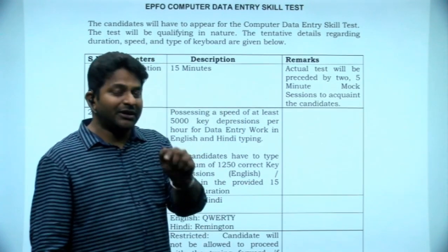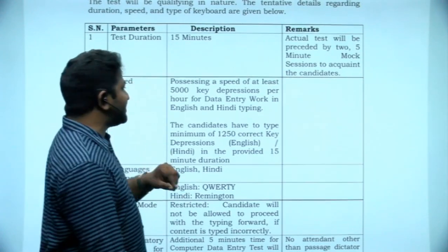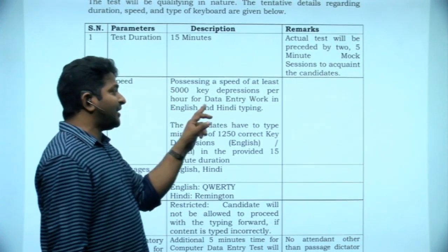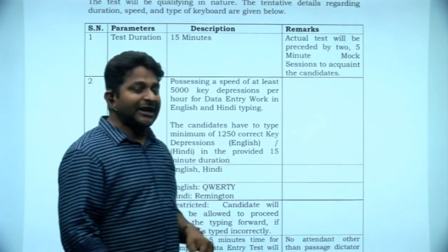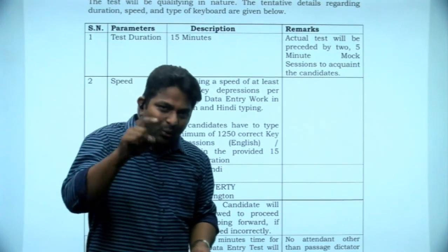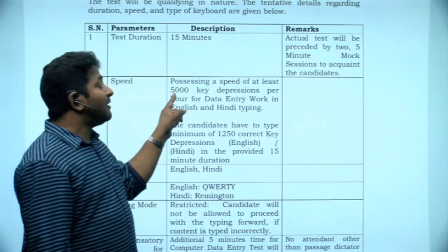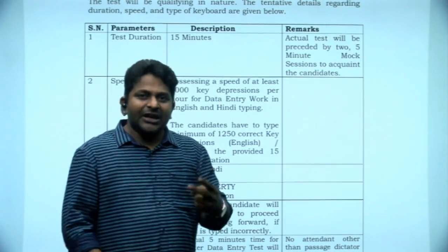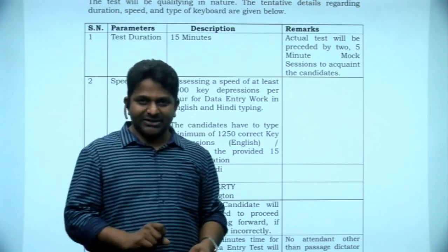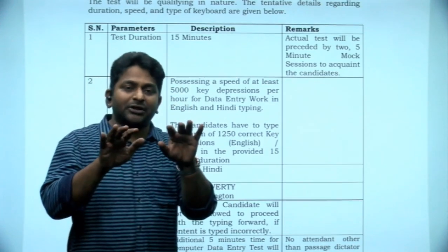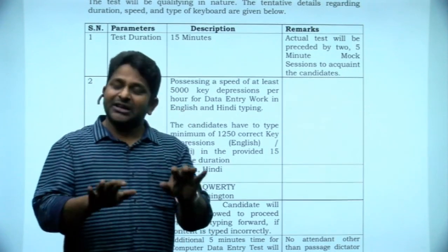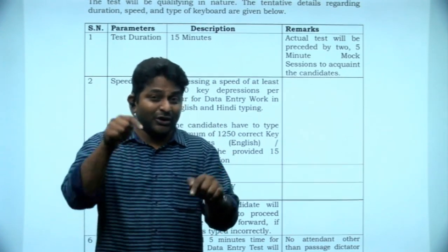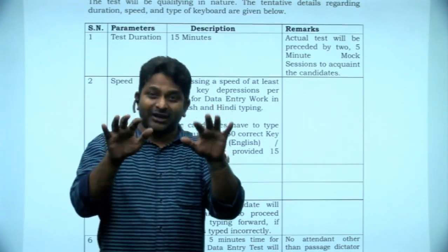The speed they are going to test is processing a speed of at least 5000 key depressions per hour for data entry work in English and Hindi typing. Typing one letter counts as one depression. In two seconds, you should be able to type three keys. If you are habituated to using both hands and all 10 fingers, this is not going to be a tough job. Even now, you can start practicing with 10 fingers — don't use just one or two fingers.